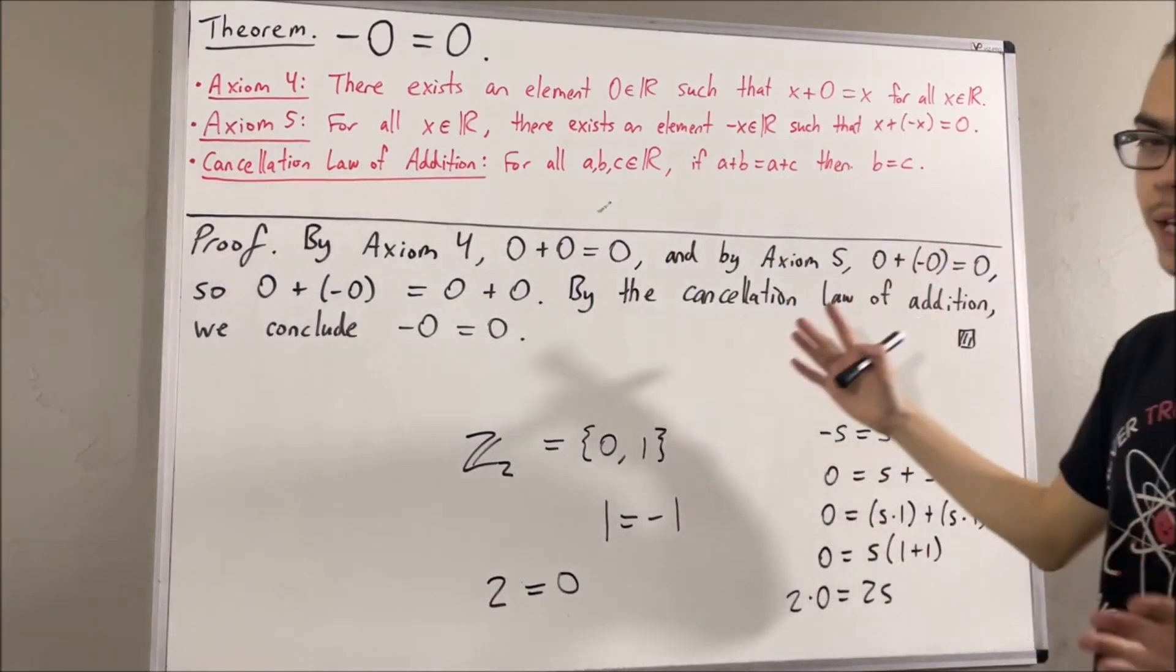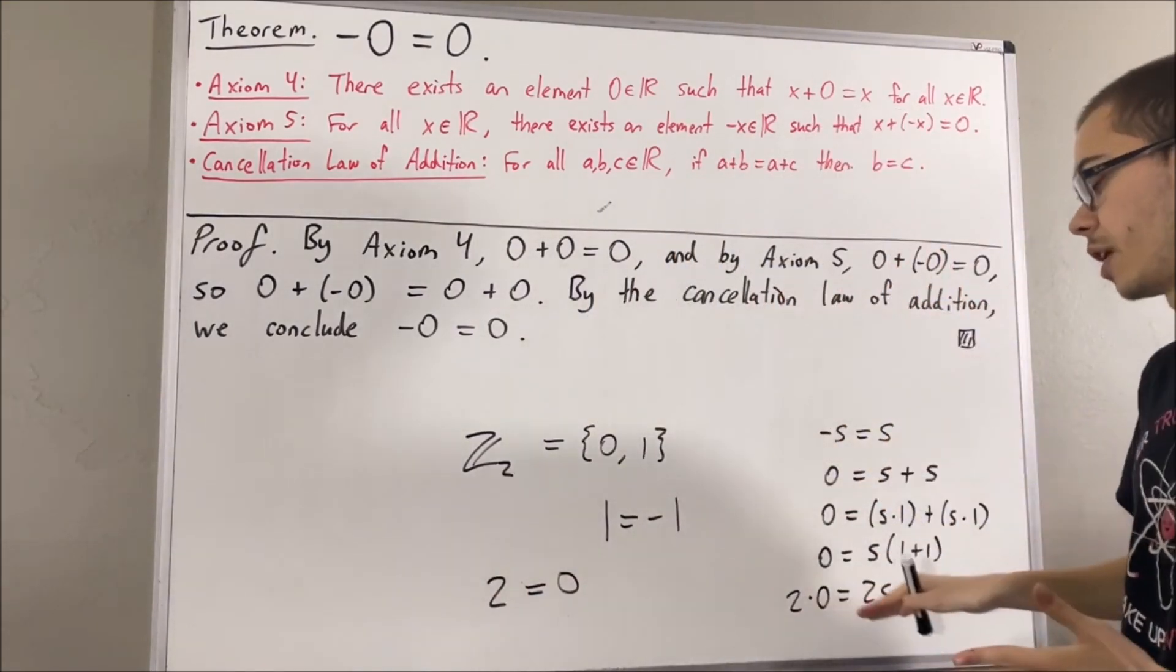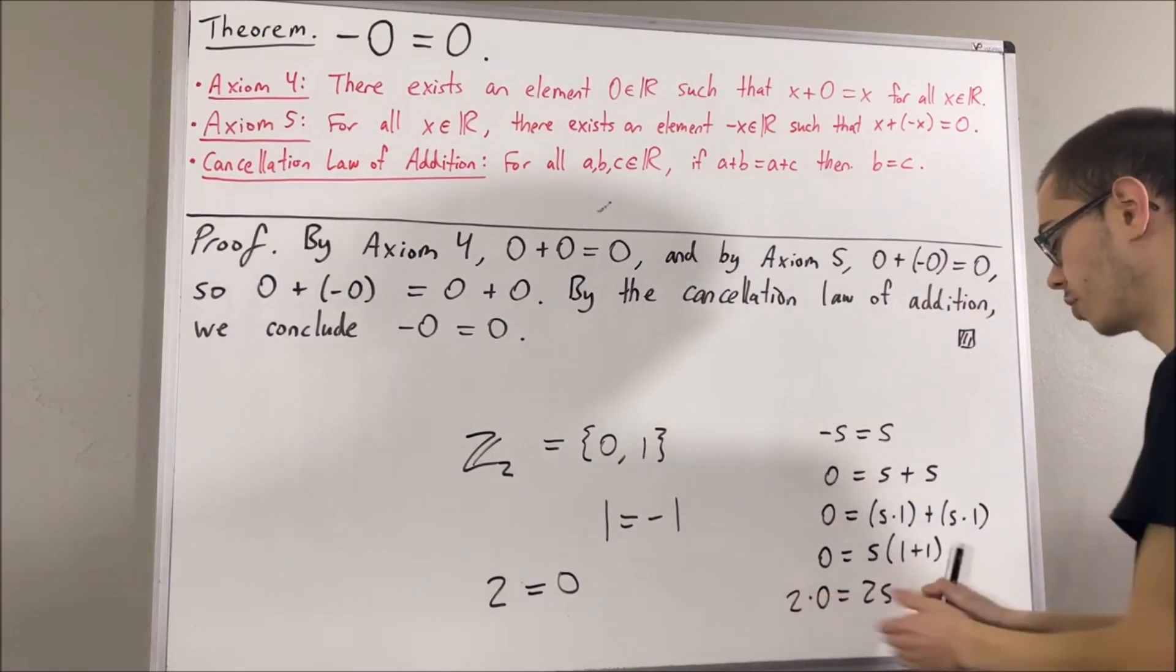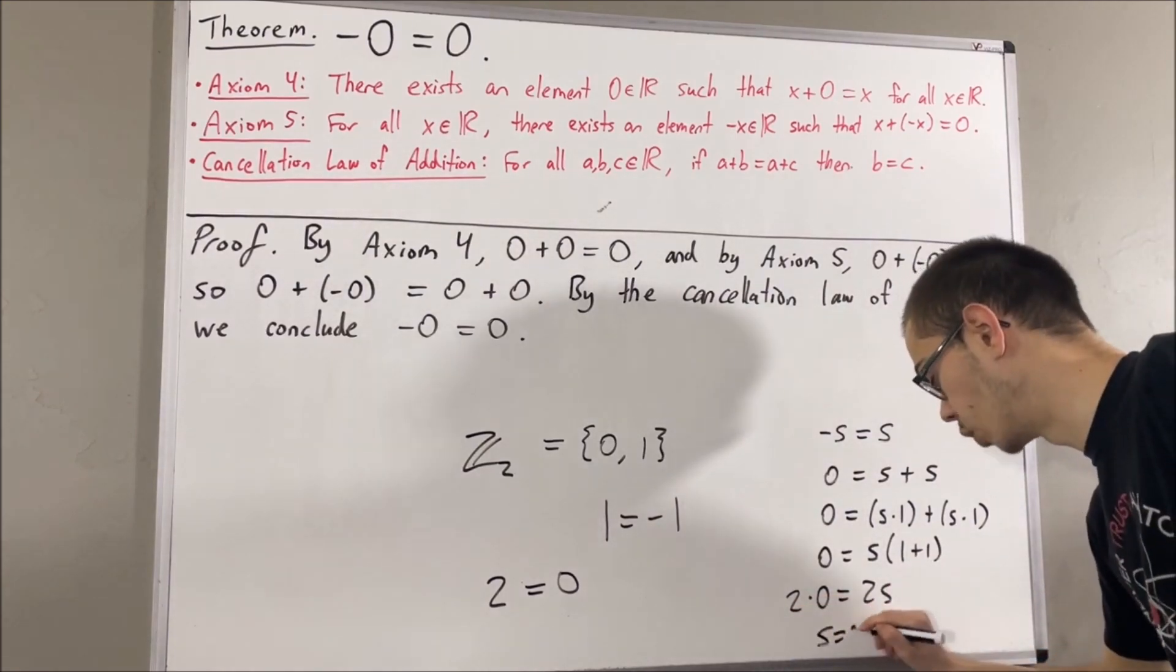When we start working with the order axioms, we'll be able to say 2 is not equal to 0. And that would justify us to allow us to cancel out 2. So, we'll obtain S equals 0.